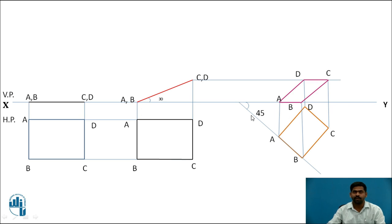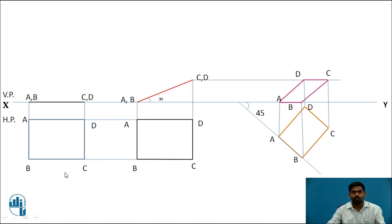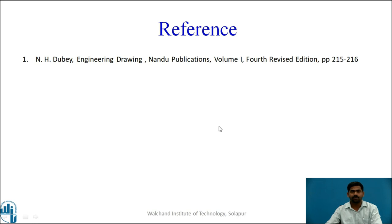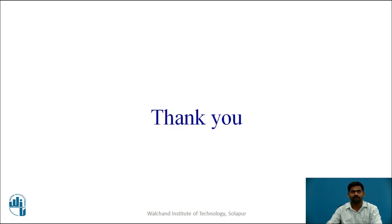Side AB is inclined 45 degrees to the VP, because inclination with the VP is drawn in the HP and inclination with the HP is drawn in the VP. The total solution is: Square ABCD is given with inclination with the HP of 30 degrees and inclination with the VP of 45 degrees. This is the complete solution for the given problem. These are the references. Thank you.